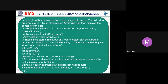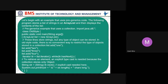Let's begin with an example using pre-generic code. The following program stores a list of strings in an ArrayList and then displays the contents. Import java.util — old style. Public static void main, String args. ArrayList list = new ArrayList. These lines store strings, but any type of object can be stored in old-style code — there is no convenient way to restrict the type stored. Iterator it = list.iterator; while it.hasNext, store result in string str, print them.